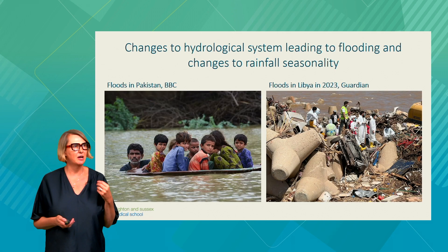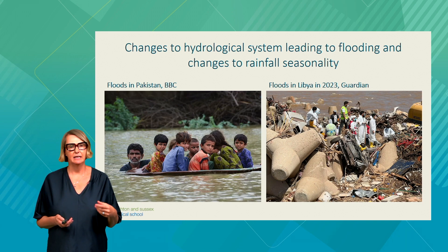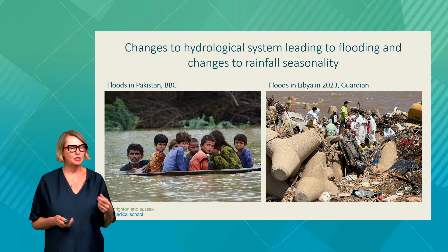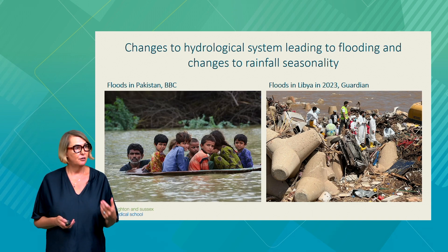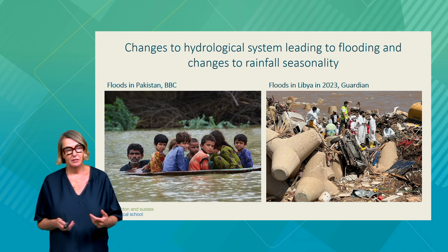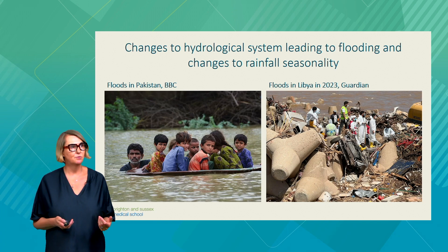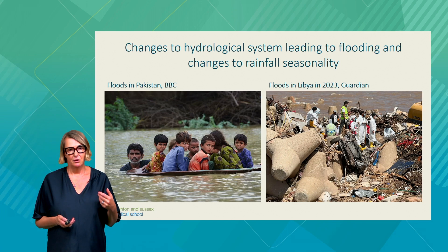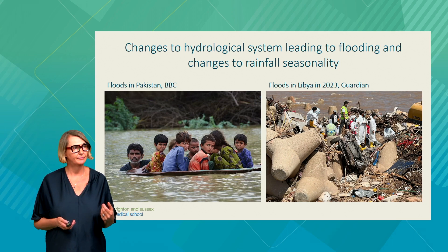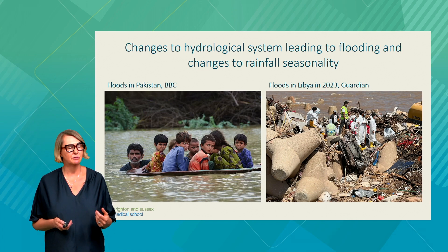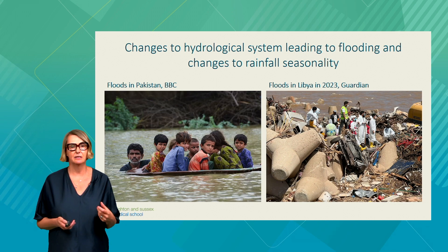Climate change is leading to changes in the hydrological system, leading to flooding and changes to rainfall seasonality. This is a photo from flooding in Pakistan — you can see the damage to infrastructure and the vulnerability of children in these settings. The other picture is from the very recent floods in 2023 in Libya, which were catastrophic. In all of these situations, we need to think about population vulnerability, damage to housing, roads, and healthcare infrastructure itself, as well as community resilience.